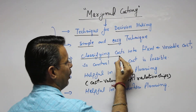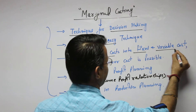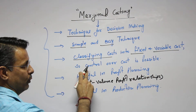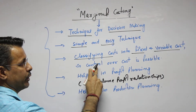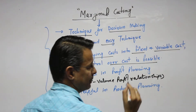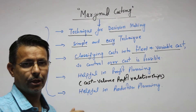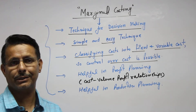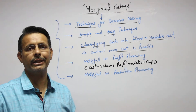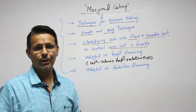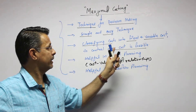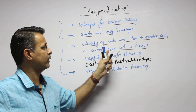This technique involves classifying cost into fixed cost and variable cost. Due to this division, there is easy cost control. The costs are divided into two parts: one is fixed cost and one is variable cost, and this variation division enables easy cost control.